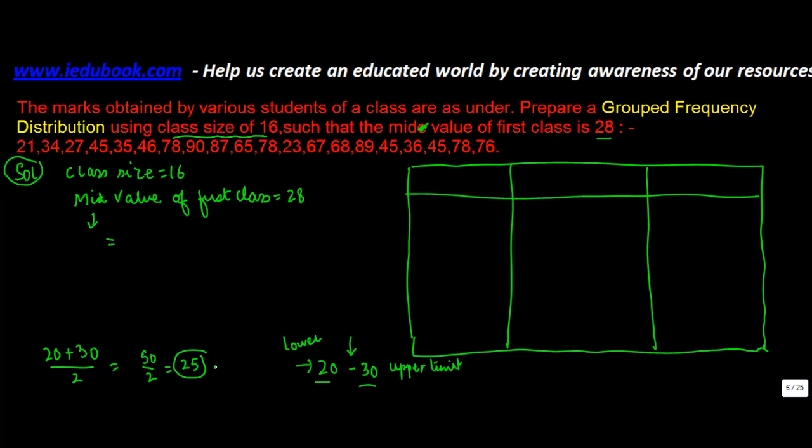Now if you notice, 25 can also be written as 20 plus 5, or 30 minus 5. And if you notice, 5 is what? 5 is basically equal to the difference between these two numbers. So upper limit minus lower limit divided by 2, which is 30 minus 20 divided by 2, equals 5.